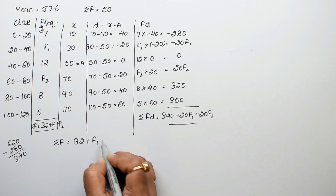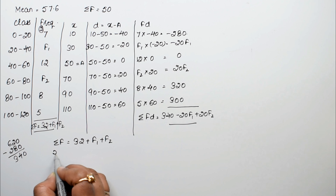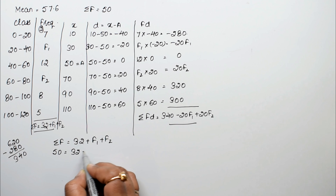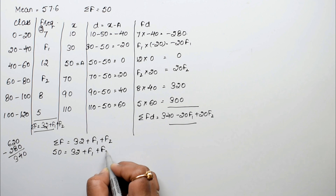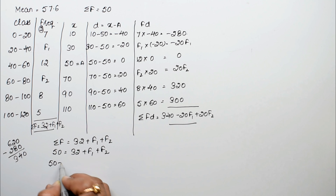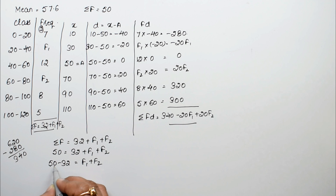Since summation f is 50, we have 50 equals 32 plus f1 plus f2, which gives us f1 plus f2 equals 18. This is our first equation.